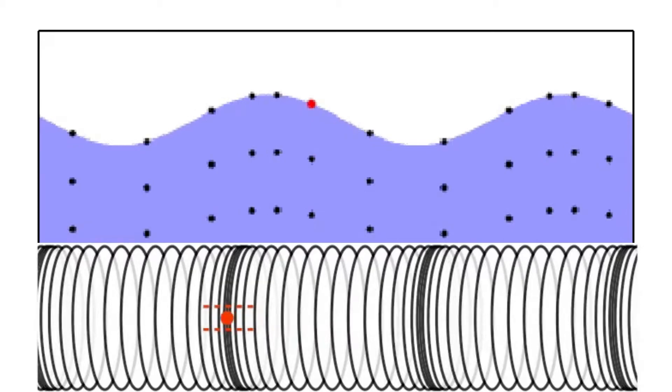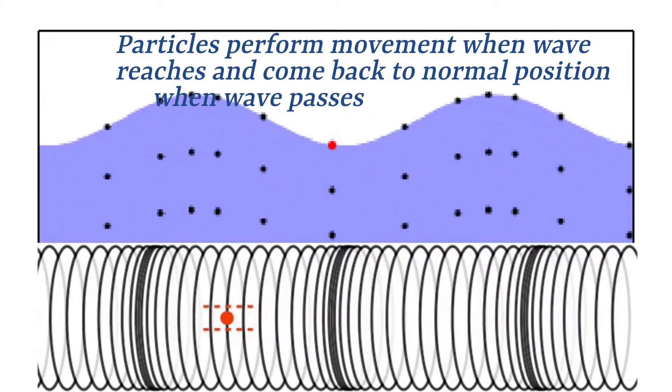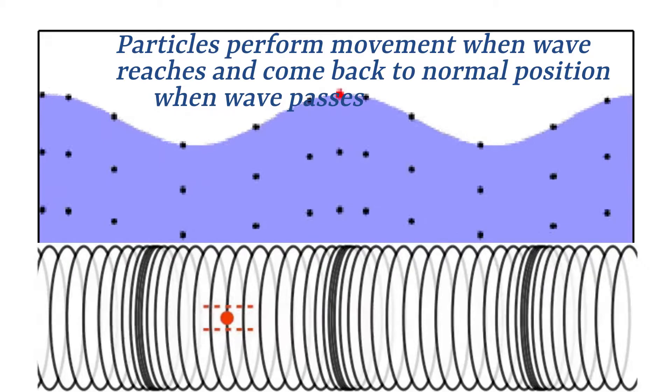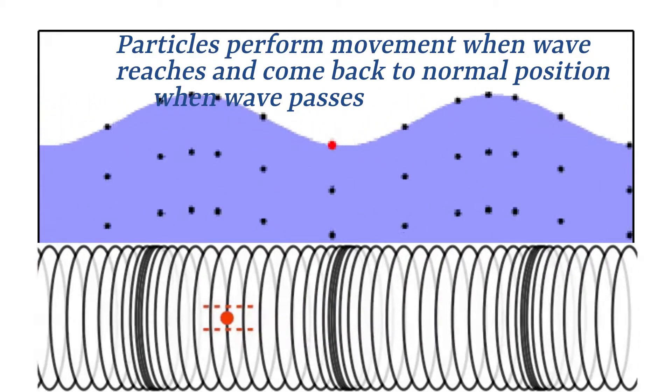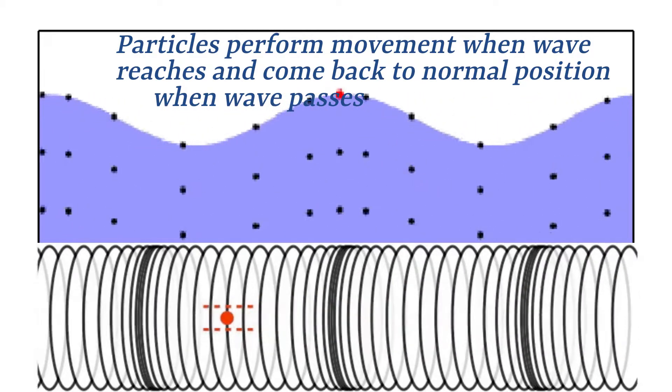Part 3: Wave is energy. In waves, particles do not travel with the wave. Instead, when a wave reaches them, they perform certain movement, and when the wave passes away, they come back to their natural position.